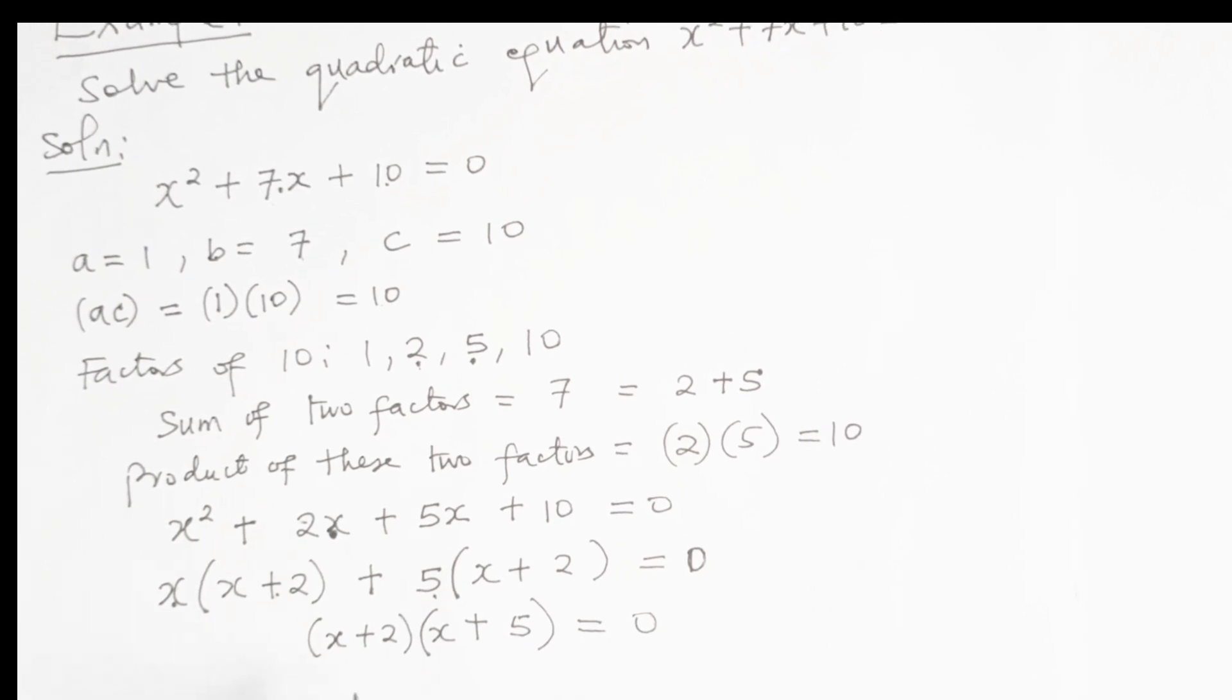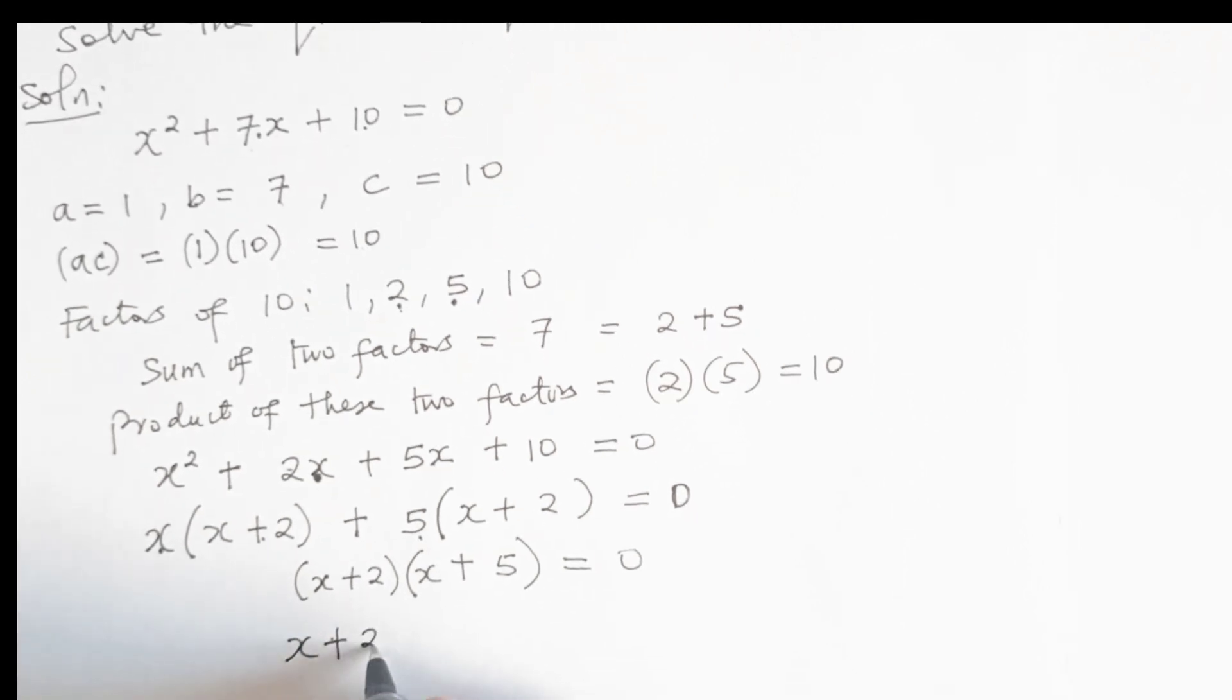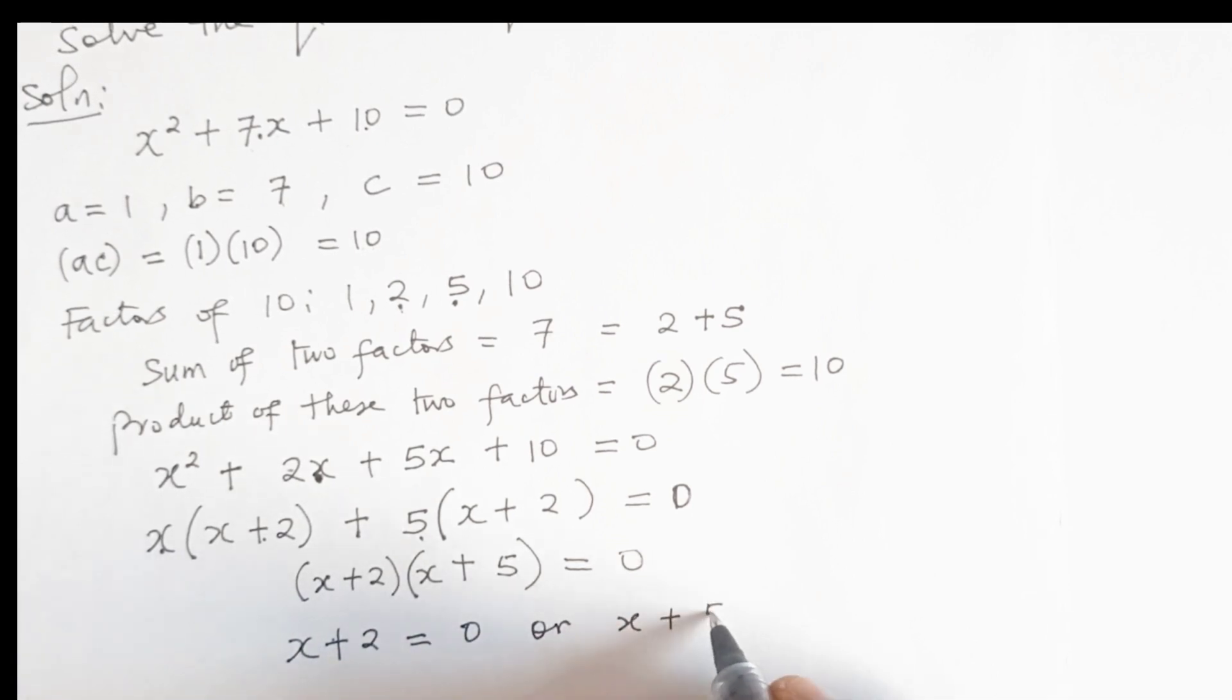If the product of two numbers is equal to 0, it means that either the first number is 0 or the second number is 0. So we will write this as x plus 2 is equal to 0 or x plus 5 is equal to 0.